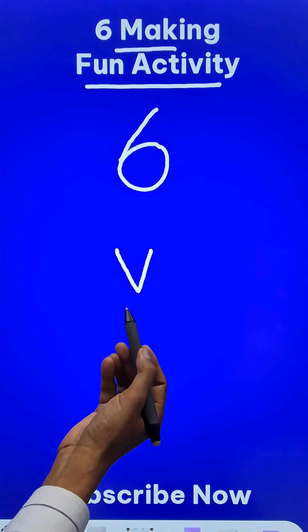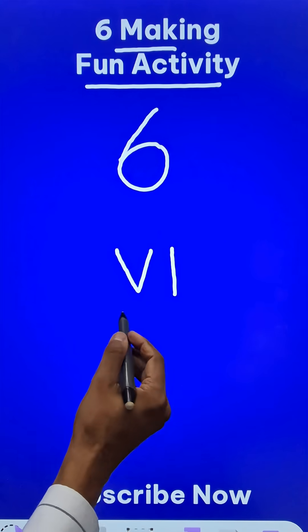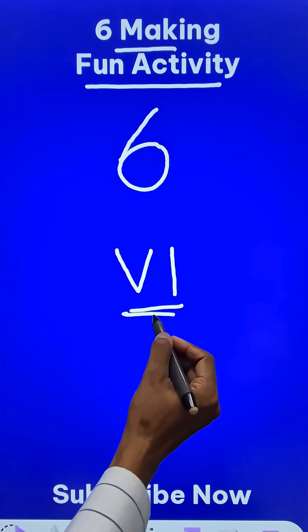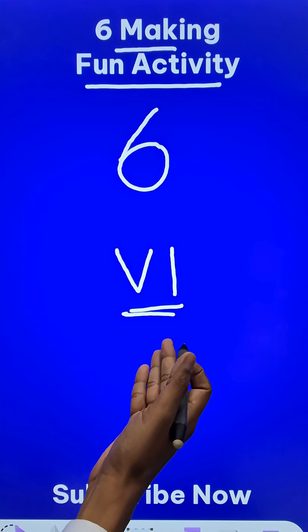And if he fails and surrenders just put a one here and that will make a Roman six. Isn't that amazing? But the climax is here.